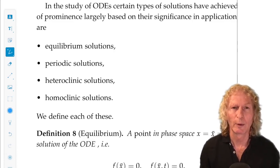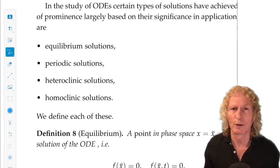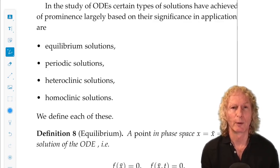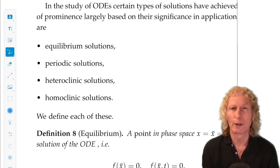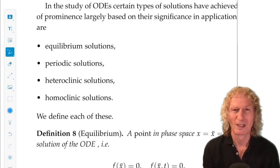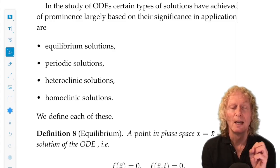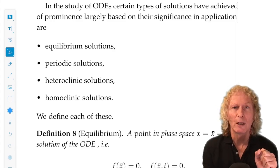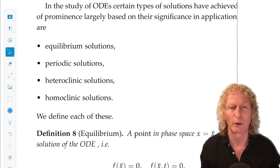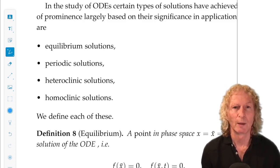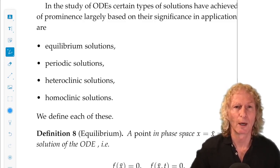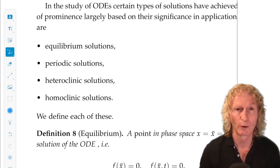Now, equilibrium solutions often go by different terms. For example, they could be called fixed points and I'll occasionally use that term. Often you'll hear the terms critical point and singular point. I don't like those for a number of reasons. And in biological and ecological applications, sometimes you will hear the term rest point. So you have to be prepared for all of these terms for the same concept. But in this course, I'll be talking about equilibrium solutions and occasionally fixed points.